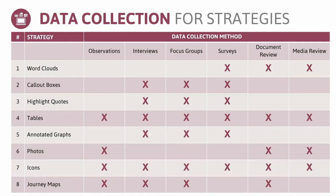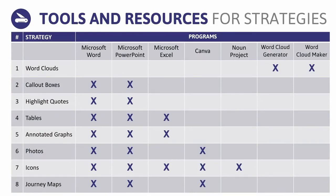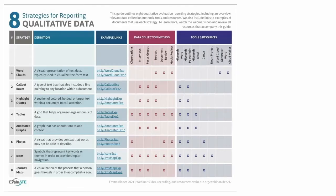Now that we've reviewed the eight visualization strategies, we need to think about data collection methods. Here we have outlined six data collection methods that pair well with the qualitative data methods reviewed in section one. This chart will help you determine which qualitative visualization strategies might work well for your evaluation plan. For tools and resources to create these visualizations: most strategies can be completed in either Microsoft Word or PowerPoint, but a few — like word clouds — take a specialized tool and we've indicated that on this chart. All the information covered in section three has been combined into a handout available to download on our website.